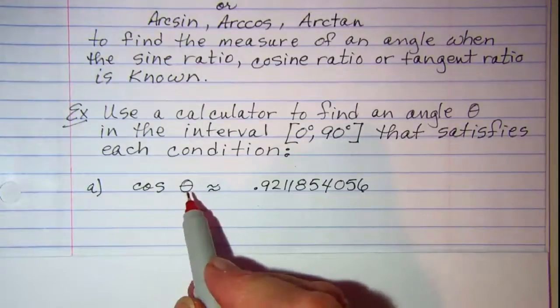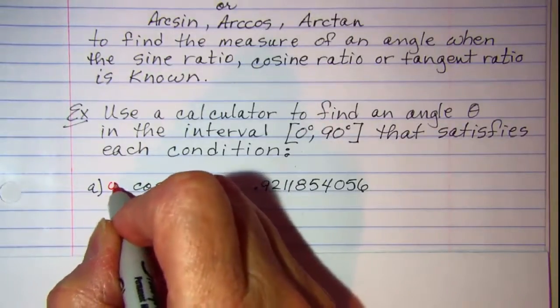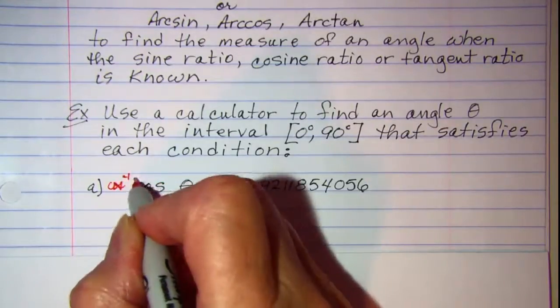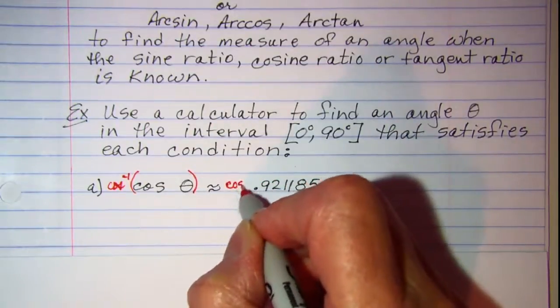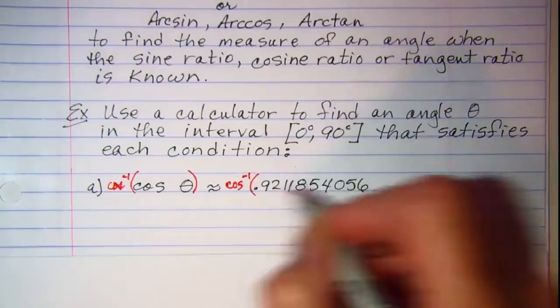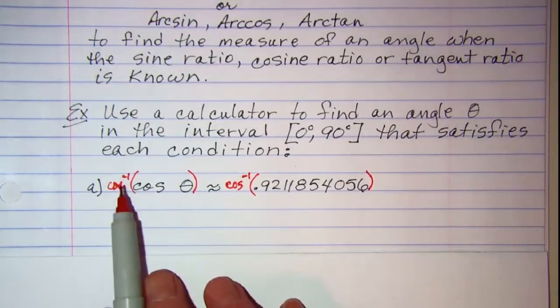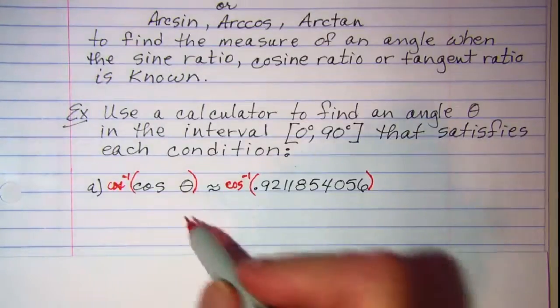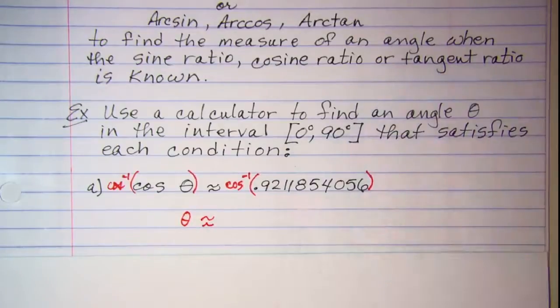To get theta by itself, we would inverse cosine both sides. And these inverse functions give us theta on the left is equal to, and then we have to get our calculator.